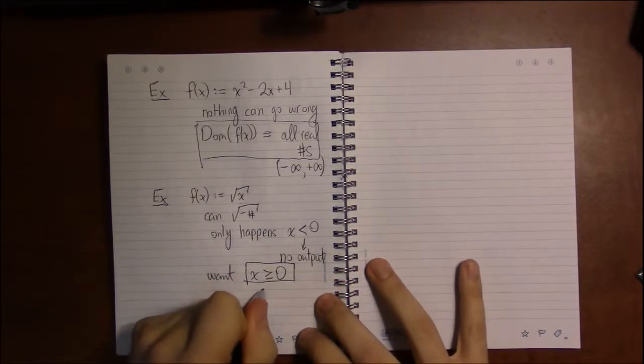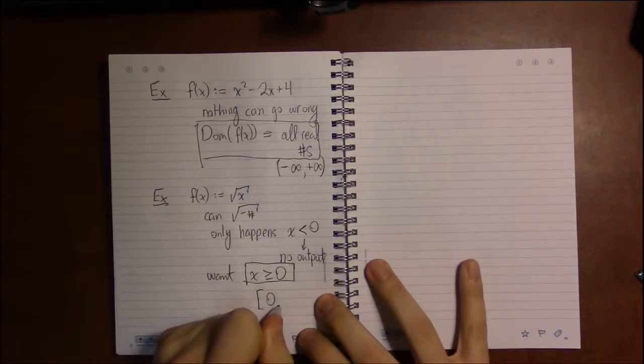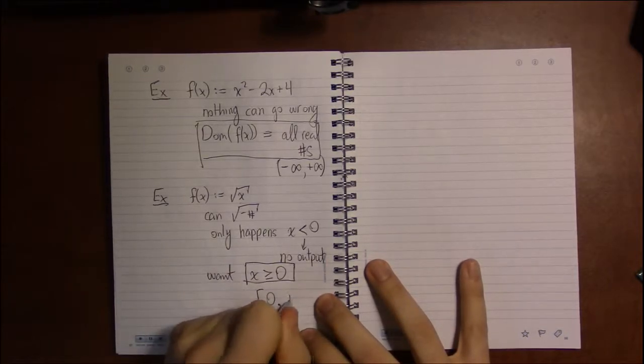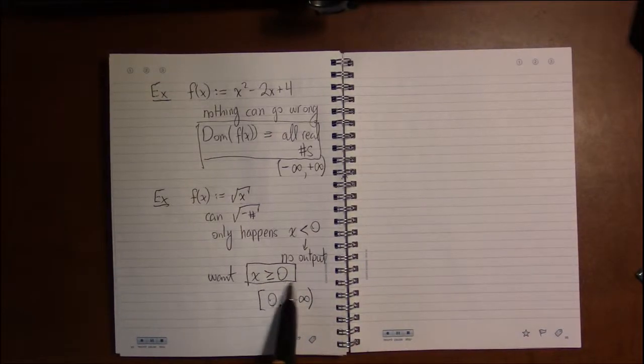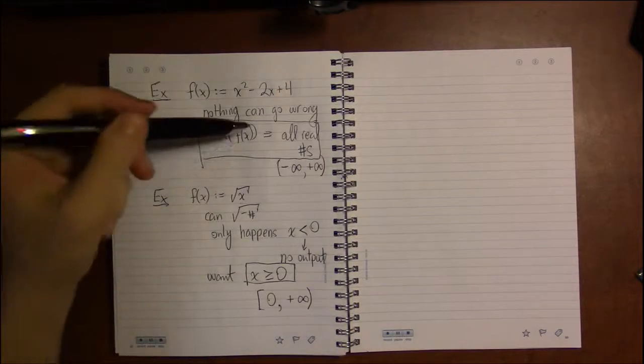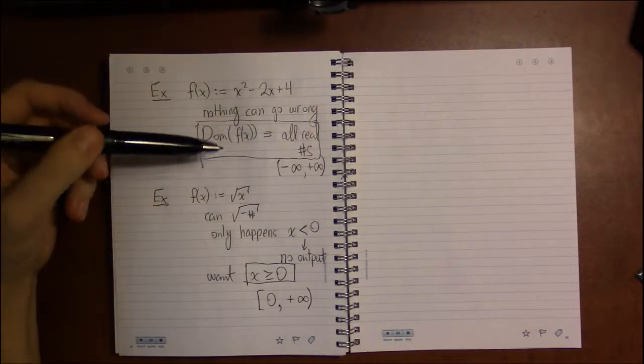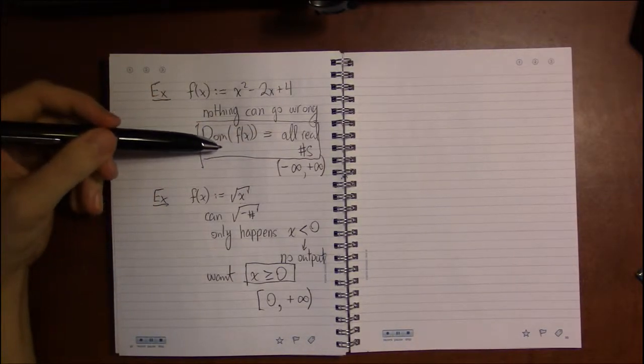Or if you want to write this in interval notation, it would be [0, ∞). But writing it like this as an inequality or stating all real numbers is perfectly acceptable.